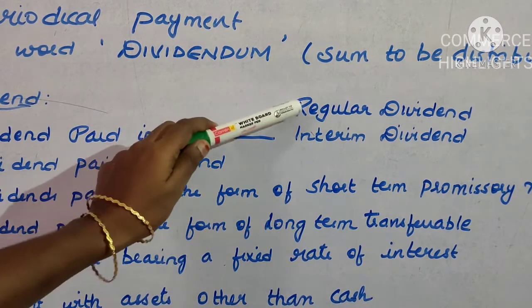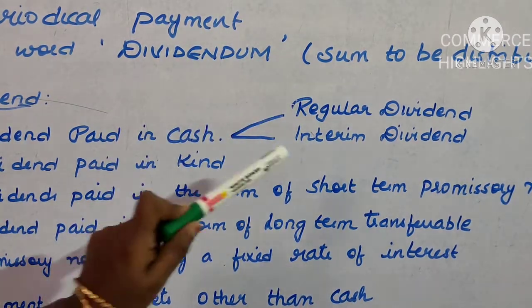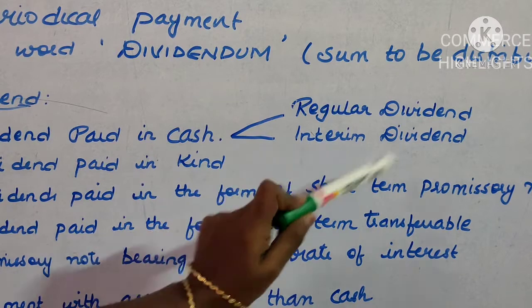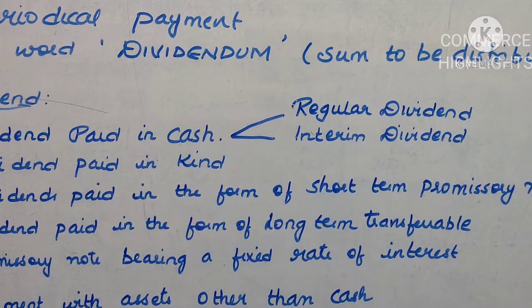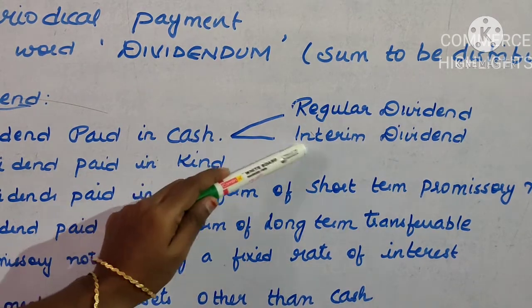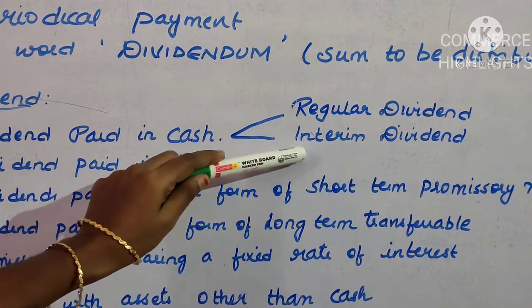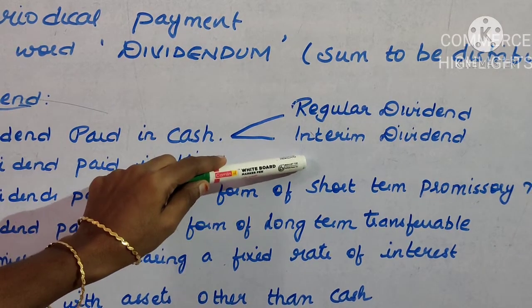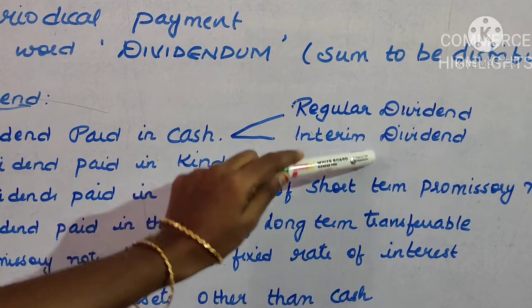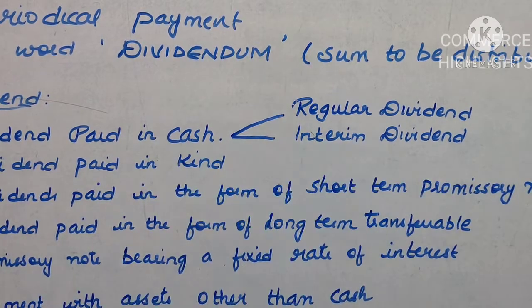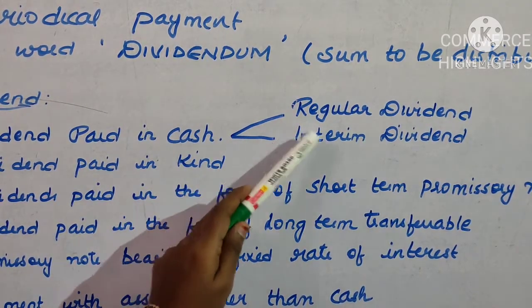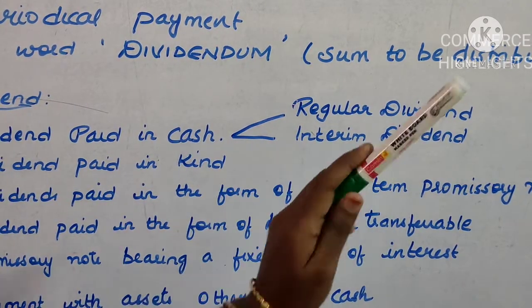Interim dividend means 'middle'. Any dividend which is paid in between two annual general meetings is generally termed as an interim dividend.